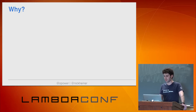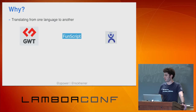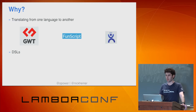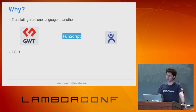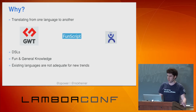Why do we care about any of this? Well, we can't assume that the set of languages we have now are going to be the perfect things forever. Sometimes we have one language that we like and we want to translate it into something else — GWT is Java to JavaScript, FunScript is F-sharp to JavaScript, and PyScript is Python to JavaScript. Another reason might be you want to make a DSL so your character designer who isn't a programmer can use a high-level language to express ideas without coming to you with every request.